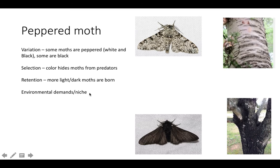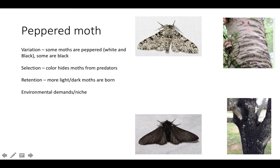The environmental niche is what drives the selection process here. During the Industrial Revolution, trees started getting covered in soot from coal plants across the English countryside. Now the selection mechanism changed — the peppered white moths became easier to see on the darkened trees, while dark moths became harder to see. So the white moths got eaten more, and we saw many more dark moths appear. Now that England has restricted pollution and environmental practices have changed, many trees are returning to white birch patterns — and we're seeing more white peppered moths again rather than black ones.